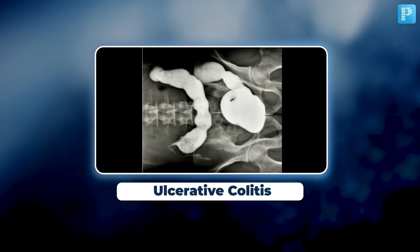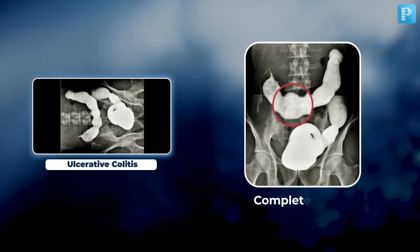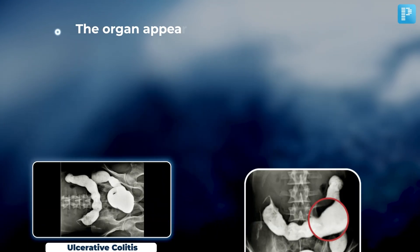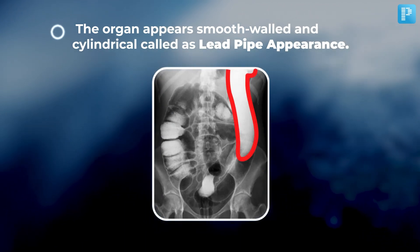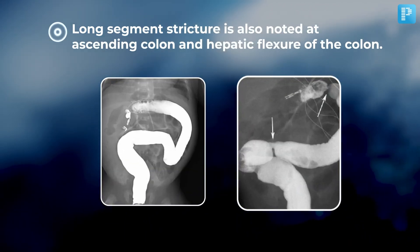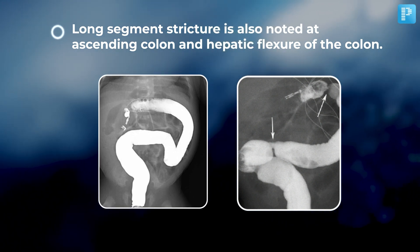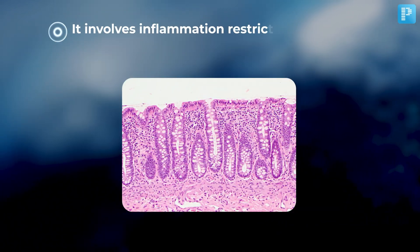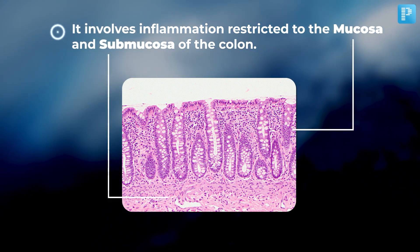The third image is an X-ray of ulcerative colitis, where you can notice a complete loss of haustral markings throughout the colon. The organ appears smooth-walled and cylindrical, called the lead pipe appearance. Severe long-segment stricture is also noted at the ascending colon and hepatic flexure. It involves inflammation restricted to the mucosa and submucosa of the colon.